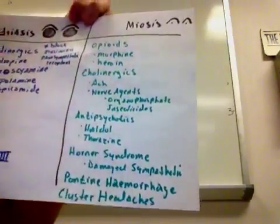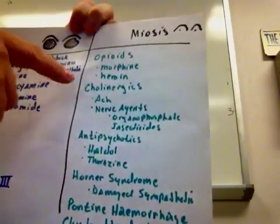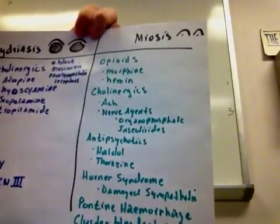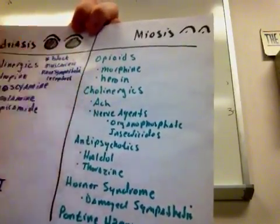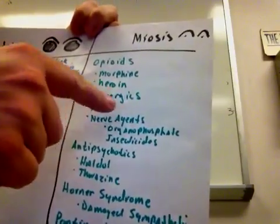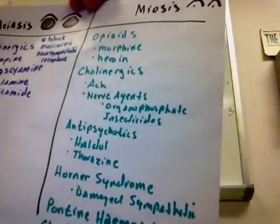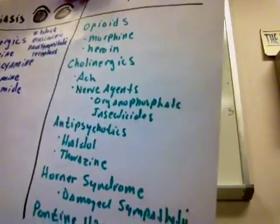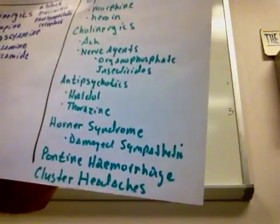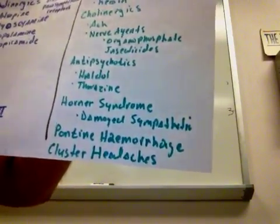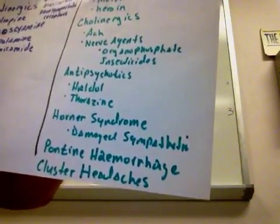When we look at miosis, lots of things can cause miosis or pupil constriction. Opioids, like morphine and heroin. Cholinergics, so medications that either mimic the parasympathetic nervous system. These could be things like acetylcholine, obviously. Nerve agents, like organophosphate insecticides, VX, VD, when we talk about weapons of mass destruction. Certain antipsychotic agents, like Haldol, Thorazine, something called Horner syndrome, where I can damage the sympathetic nervous system, specifically to the face. And I can have some issues with the face.